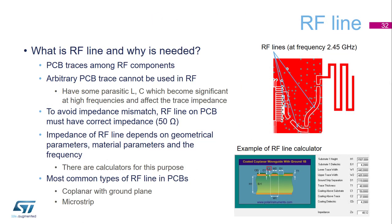RF line: RF lines are PCB traces among RF components. An arbitrary PCB trace cannot be used in RF because it has parasitic inductance and capacitance which become significant at high frequencies and affect the trace impedance. To avoid impedance mismatch, RF lines on PCB must have correct impedance, commonly 50 ohms. Impedance of an RF line depends on geometrical parameters, material parameters, and frequency. Calculators are available for this purpose. The most common types of RF lines in PCBs are coplanar with ground plane (GCPW) and microstrip line.